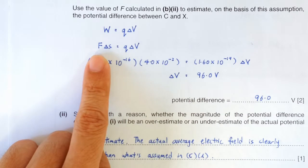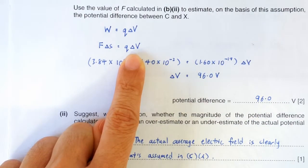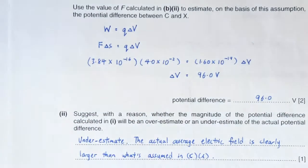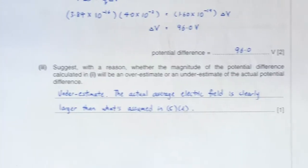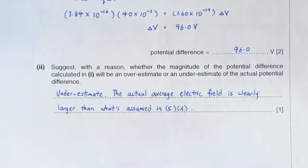An electric force that's too small will lead to a calculated value of potential difference that's too small. That's why we say what we calculated was too small. So it's an underestimate.